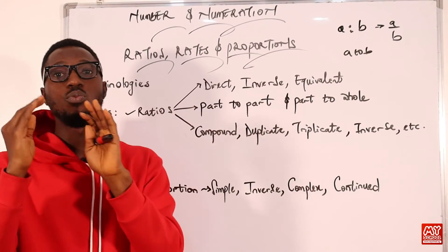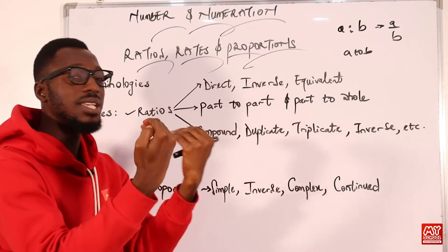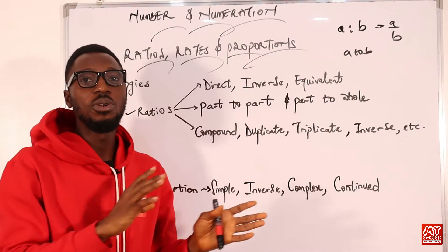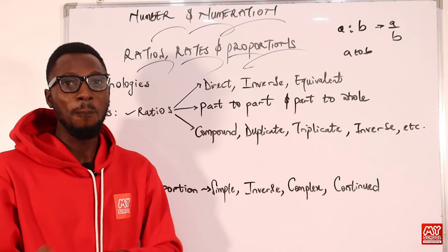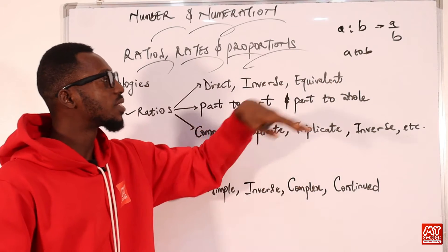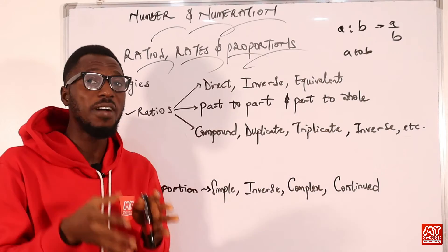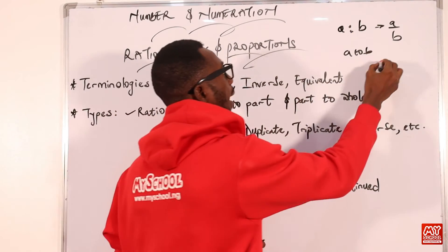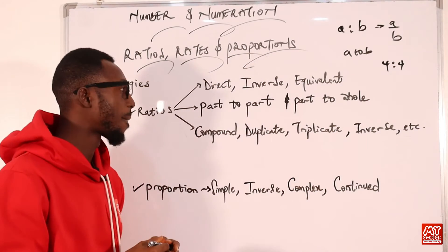Inverse means as one quantity is increasing, the other quantity being compared is decreasing — just like examples you can draw from science, such as Charles' law, Boyle's law, and the ideal gas equations. When we say ratios are equivalent, the antecedent and consequent have the same value — for instance, 4 ratio 4.